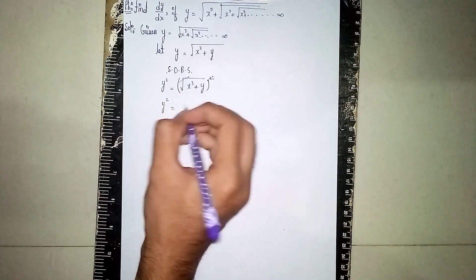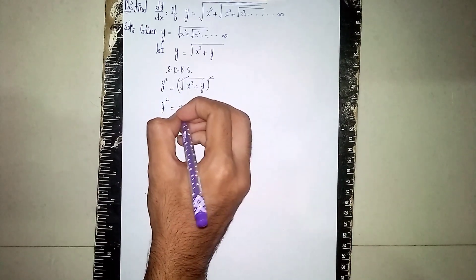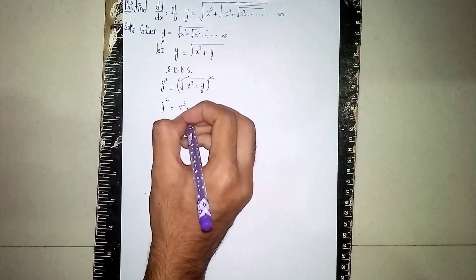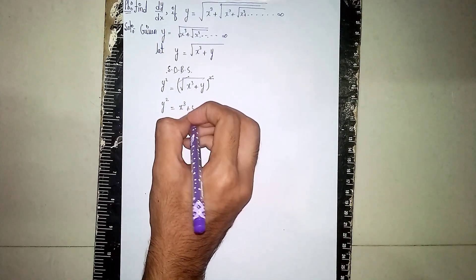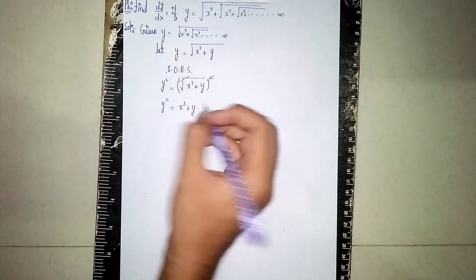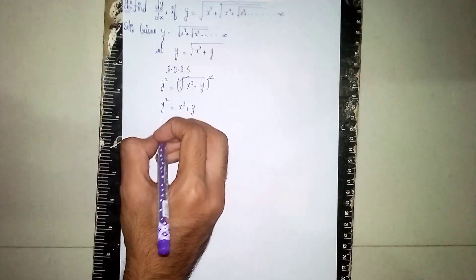What remains after cancellation is: y² = x³ + y. Now we differentiate both sides.